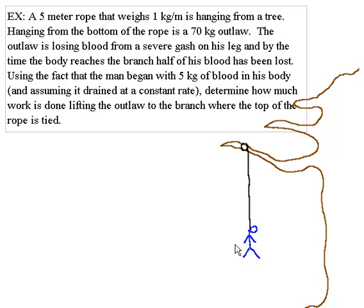I'll read the problem out loud. A 5-meter rope that weighs 1 kilogram per meter is hanging from a tree. Hanging from the bottom of the rope is a 70-kilogram outlaw. The outlaw is losing blood from a severe gash in his leg, and by the time the body reaches the branch, half of his blood has been lost. Using the fact that the man began with 5 kilograms of blood in his body and assuming it drained out at a constant rate, determine how much work is done lifting the outlaw to the branch where the top of the rope is tied.